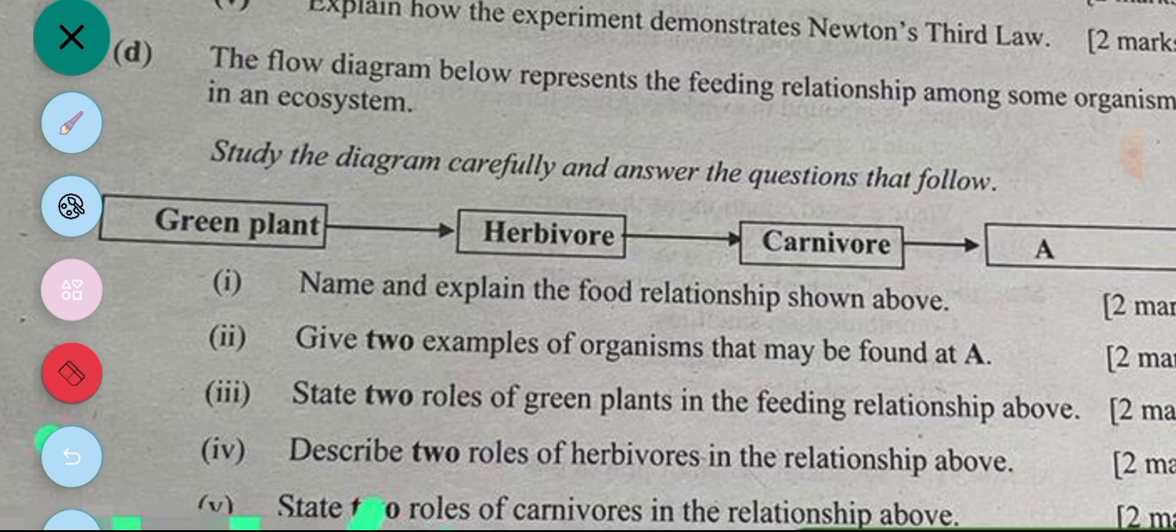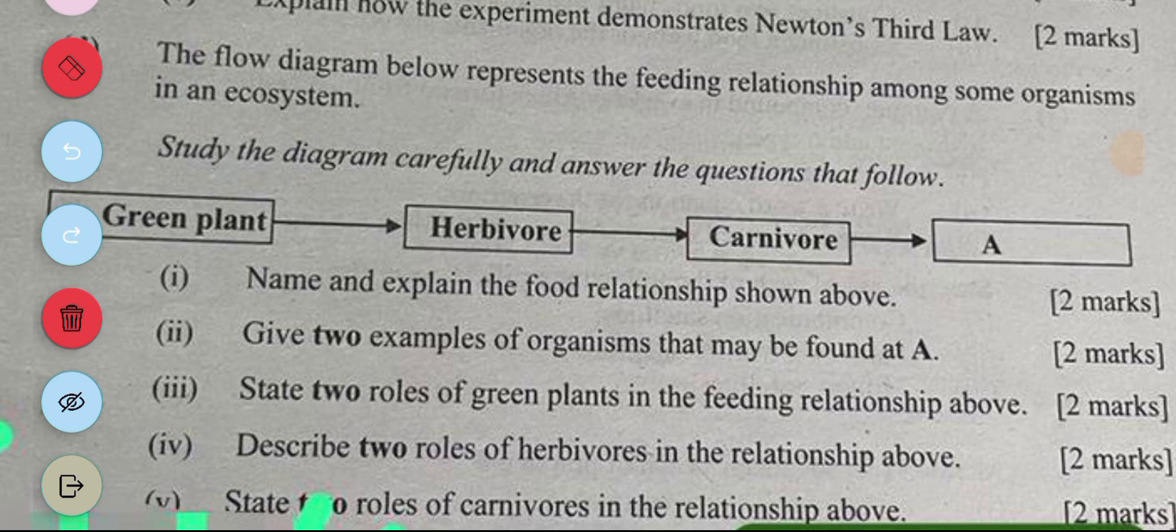Then ii, give two examples of organisms which may be found at A. A could actually be a decomposer, so we could have a fungi, we could have bacteria as well. iii, state two roles of green plant in the feeding relationship above. So the first role is that it provides food for the herbivore. The second role of the green plant is it begins the food chain, so without it this food chain wouldn't have been there.